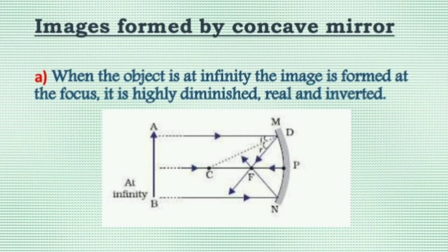Image formed by a concave mirror. Case one: object at very large distance or at infinity. In this case, the image is real, highly diminished, and inverted. An example is the head mirror used by a doctor.